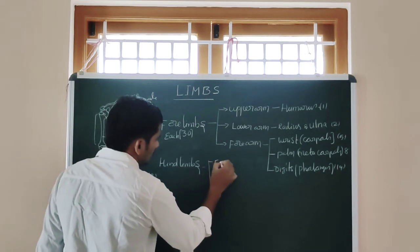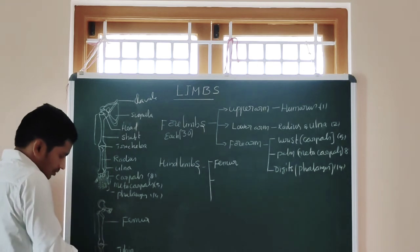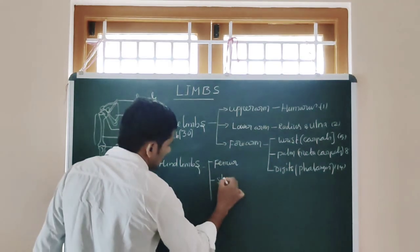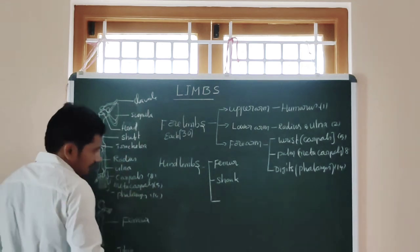That is the femur. This is the femur, these two bones put together are the shank, and completely this is the foot.